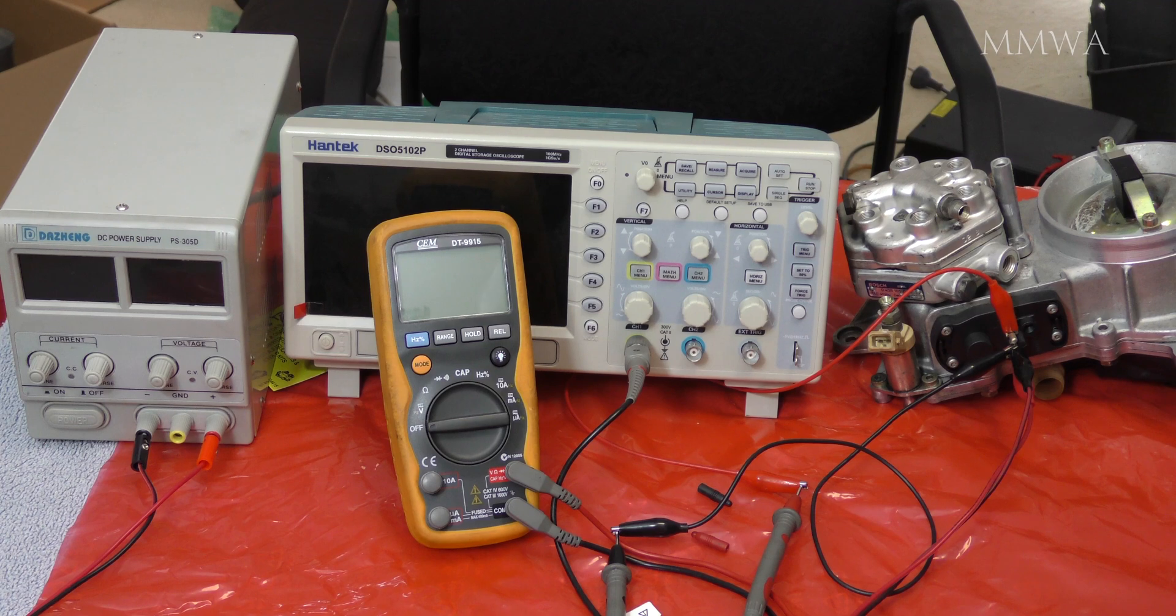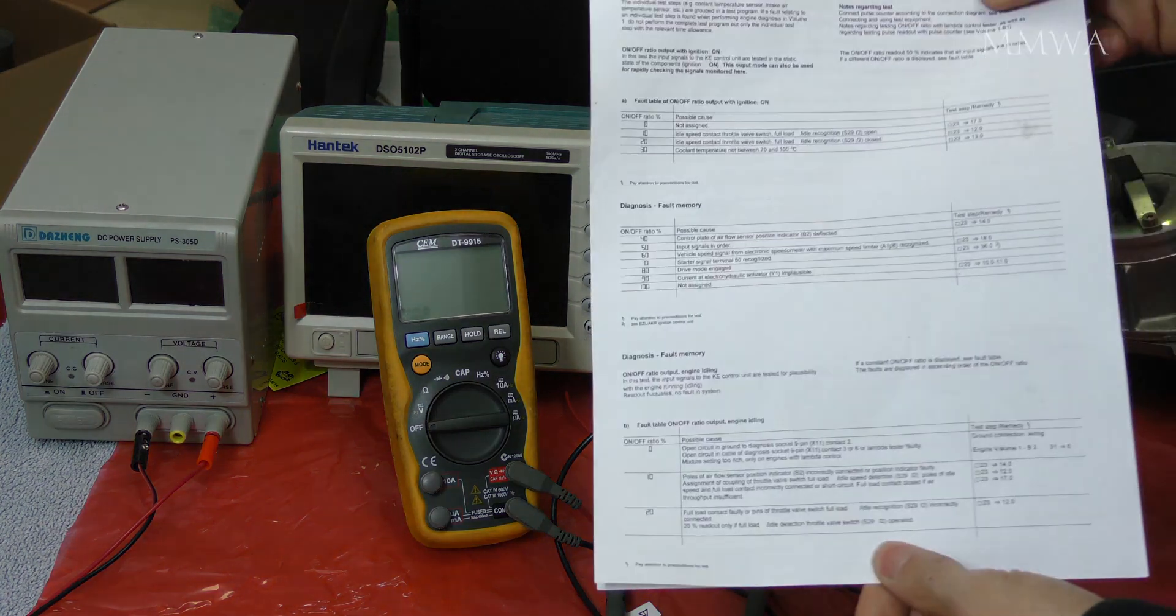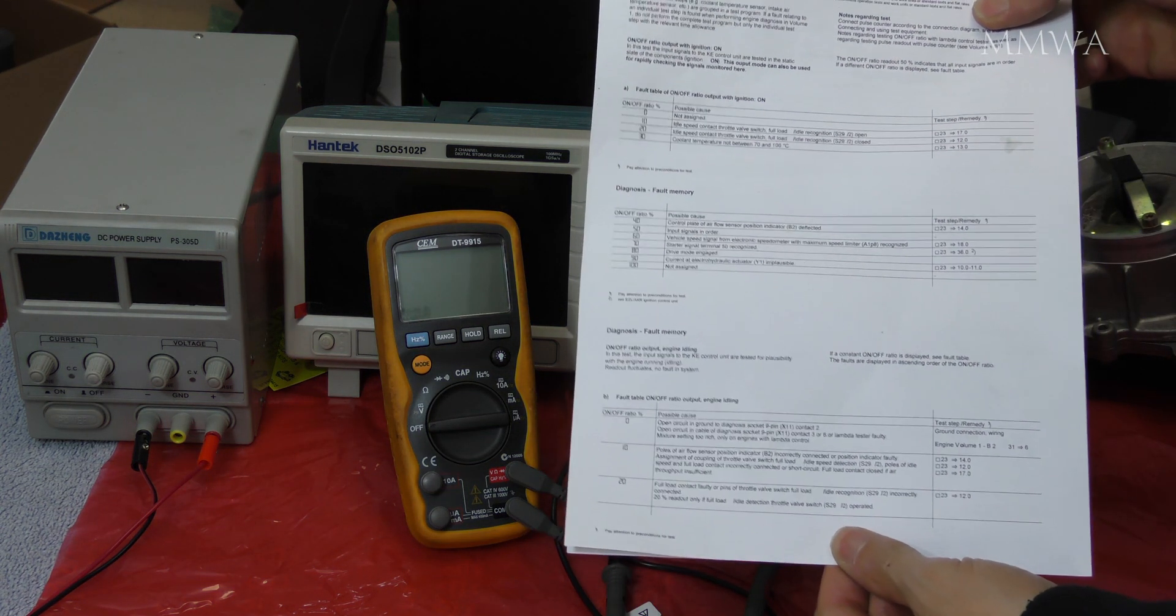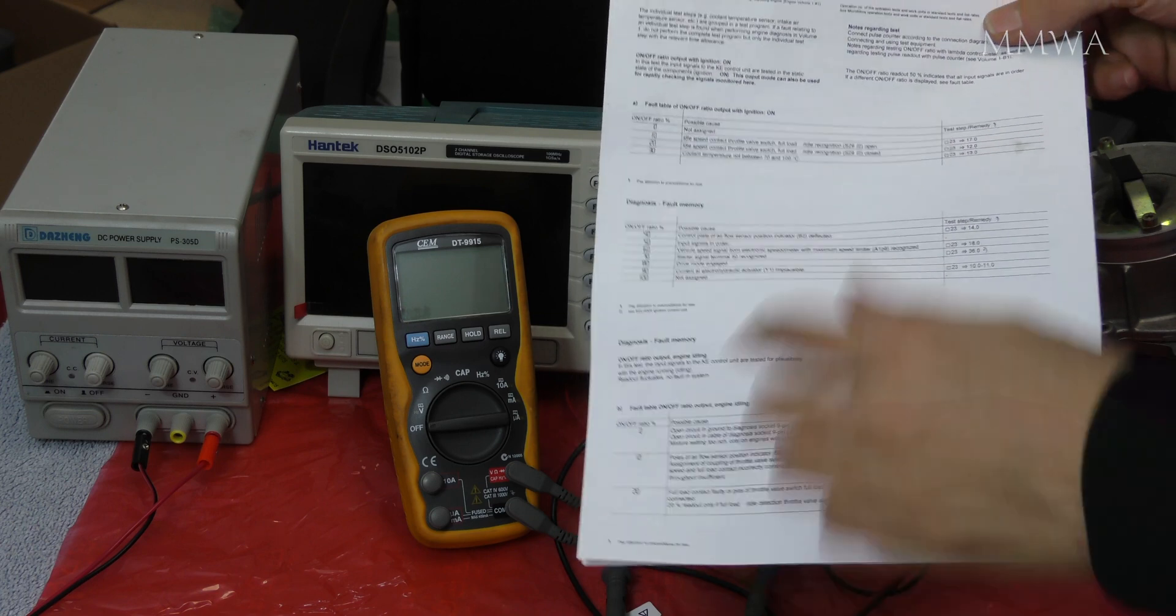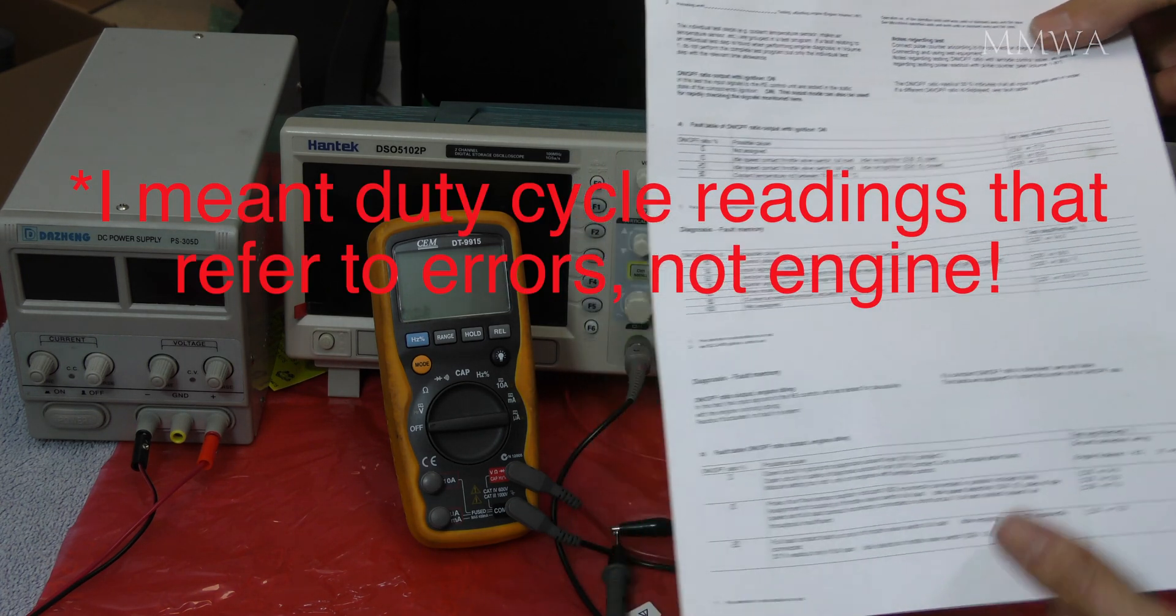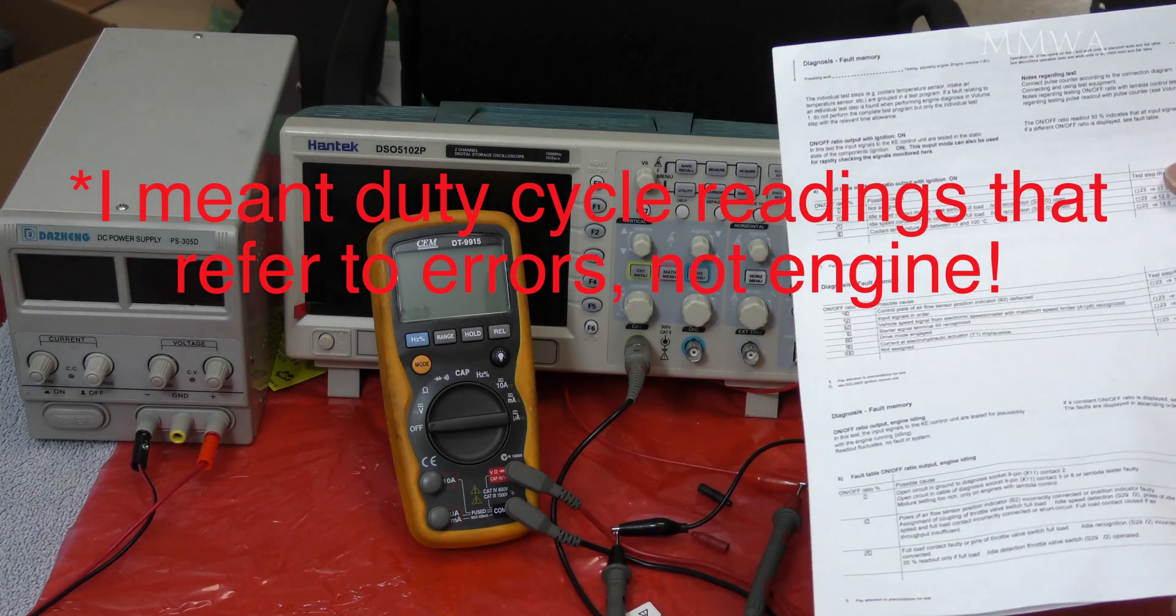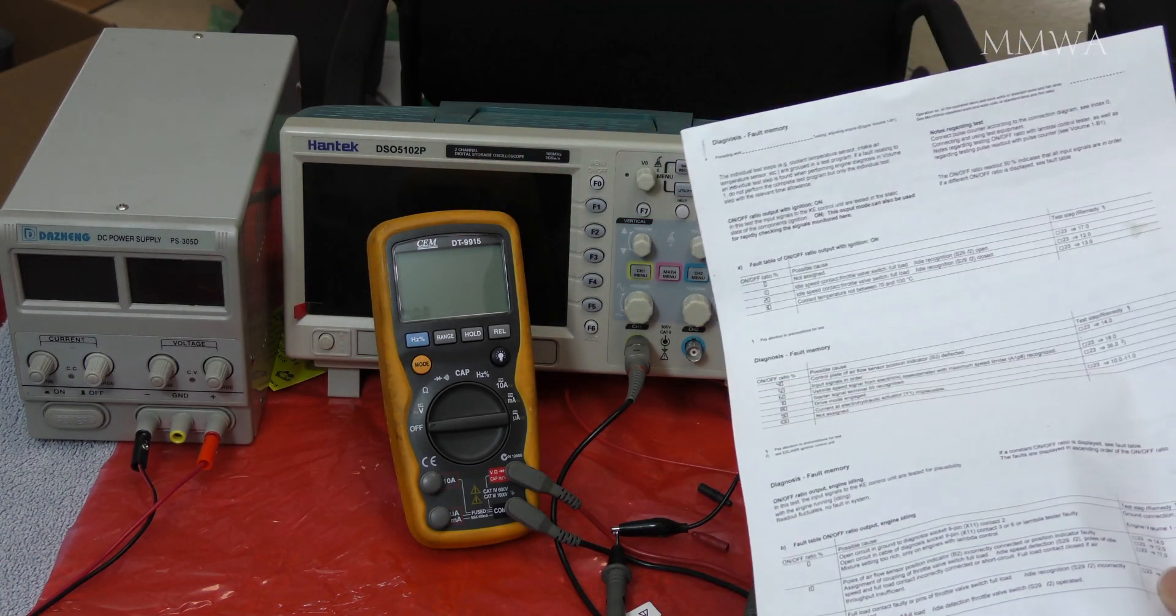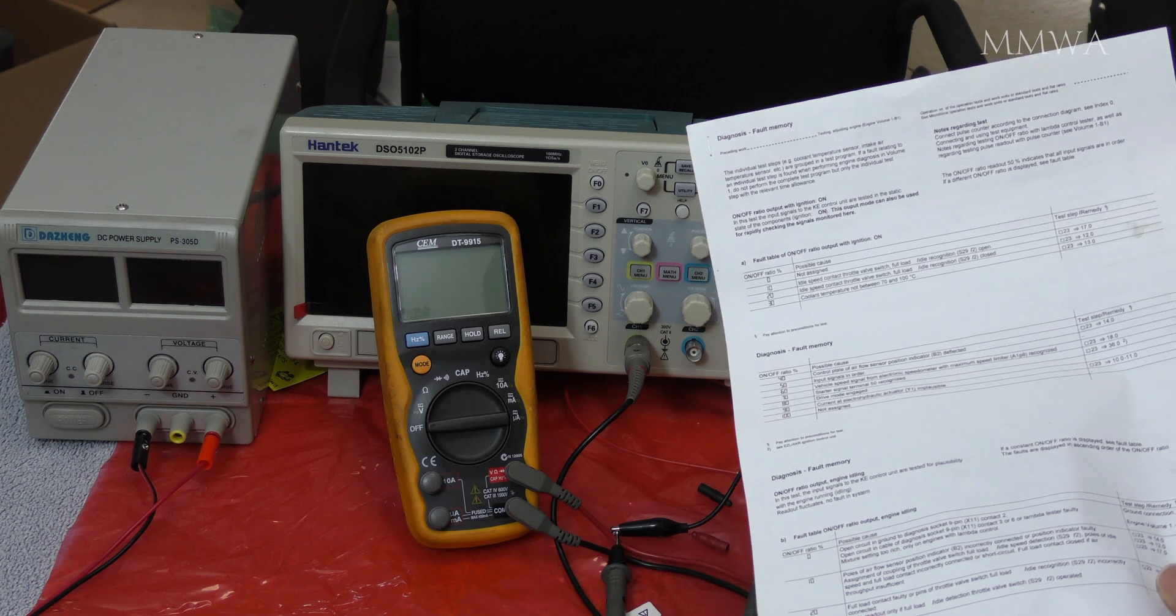And because I know someone is going to ask, I do have a printout of the duty cycle ratings that refer to specific engines on the 104 980. And I'm going to show how this meter actually reports the on duty cycle versus the off.